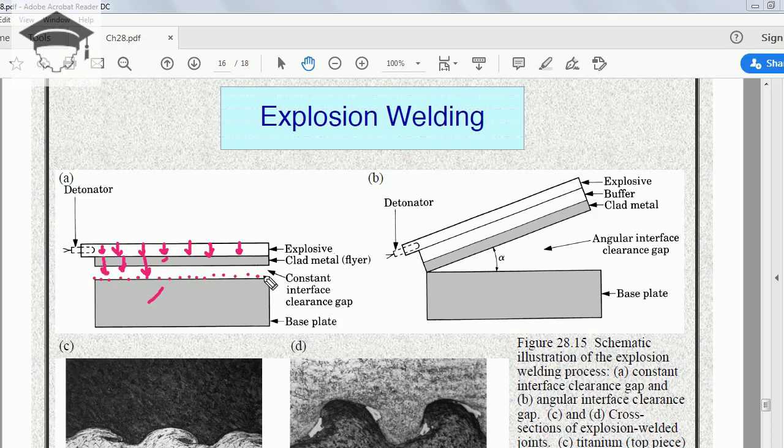We have two plates: the base plate and the flyer plate. The explosive imparts very high energy to the flyer plate, which impacts the base plate. Various microscopic welds occur at the interface.